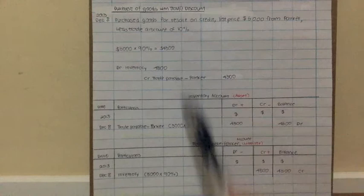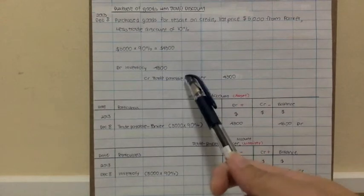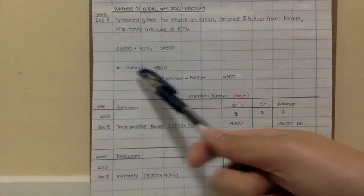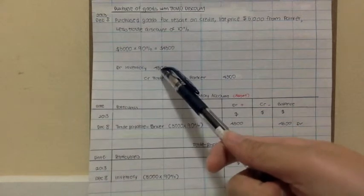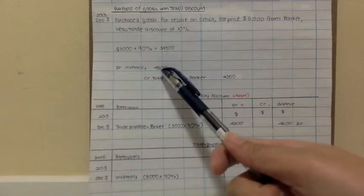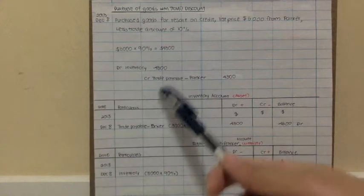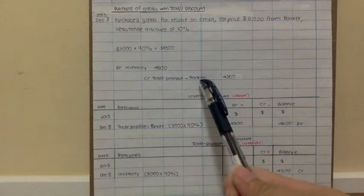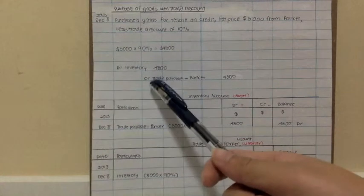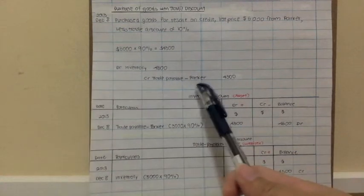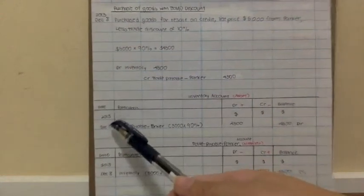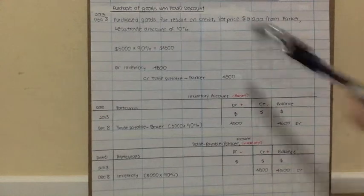When you actually purchase goods your inventory will increase, so it will be debit inventory $4,500. At the same time your liability will also increase because now you owe Parker money, so it's credit trade payable Parker $4,500.